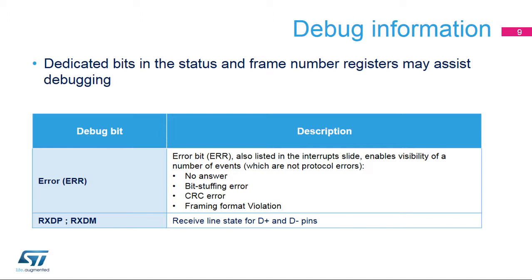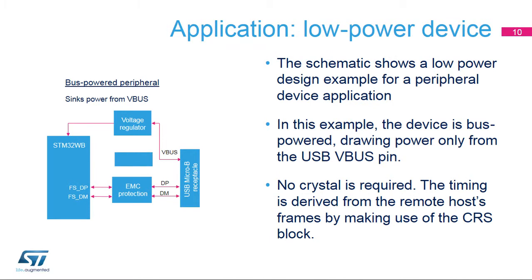There is also a way to directly read the states of the D-plus and D-minus lines. Here is an application example of a low-power peripheral device. Power is drawn directly from the USB V-Bus signal, and no crystal is required.